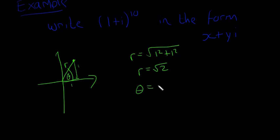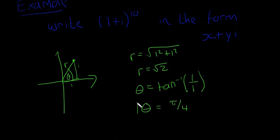Theta is going to be equal to the inverse tan of 1 over 1, so theta is going to be equal to pi over 4.